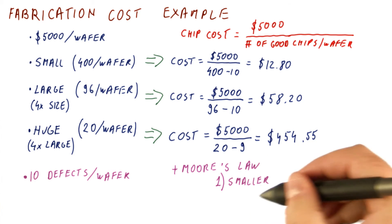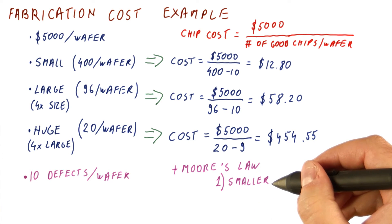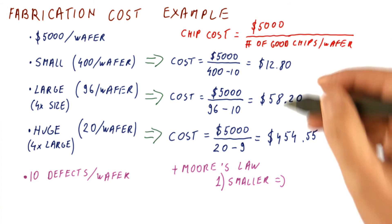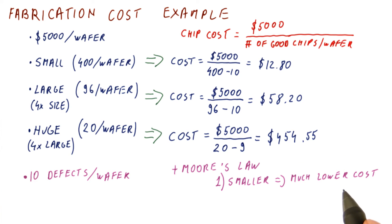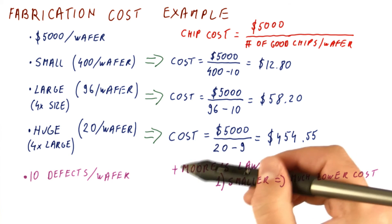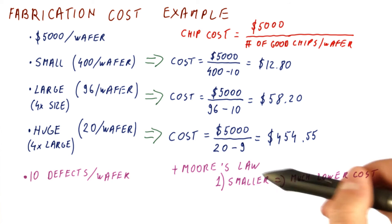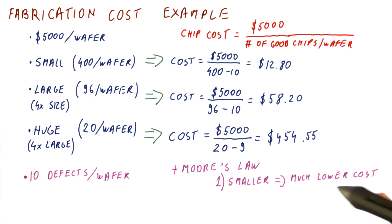One, we can have a smaller chip that does exactly the same things that a larger chip could do previously, because now we can make things smaller. And as you can see, getting things smaller gives us much lower cost. So one way of benefiting from Moore's law is to get things smaller and thus a lot cheaper than before while keeping the same functionality.